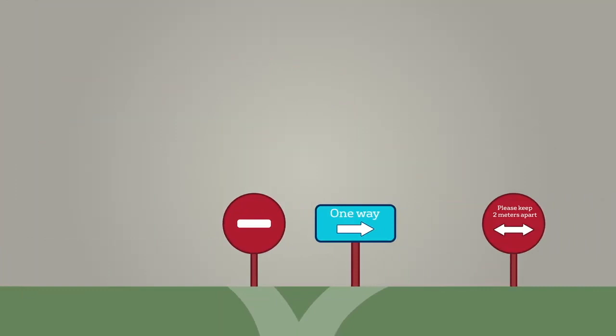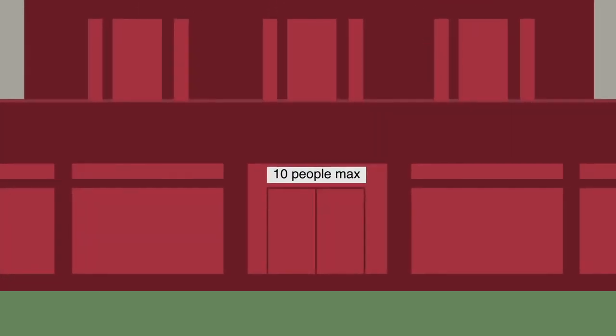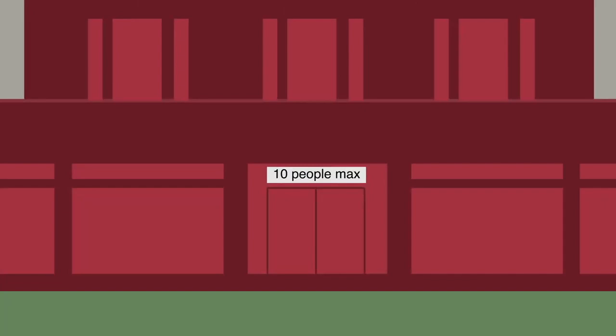Your residence will have social distancing measures in place. This will include one-way systems, distance markers and signage. There will be signs on the doors of communal spaces to tell you how many people can safely use the space at one time.